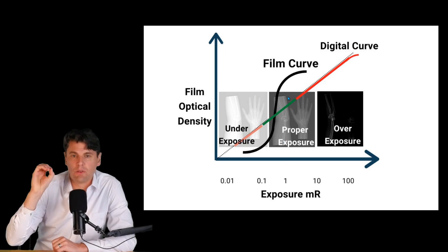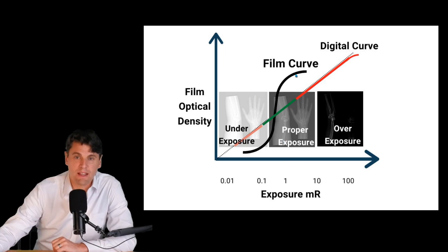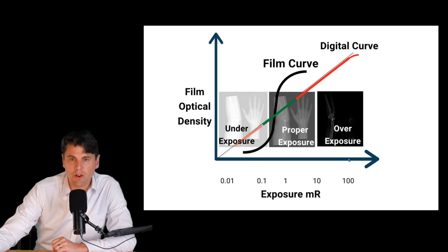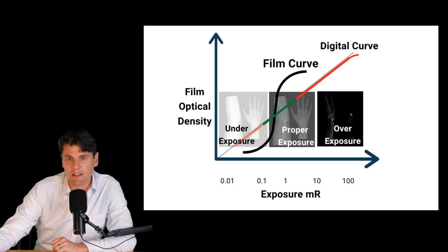We have an artifact due to the limitations of the film — namely in this region here, things look overly saturated. The same thing on the other side looks like an underexposure, where on one side everything is saturating on the bright end, and on the other side everything is saturating on the dark end.